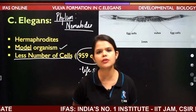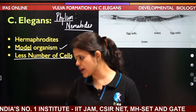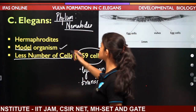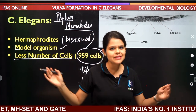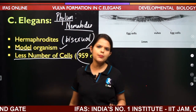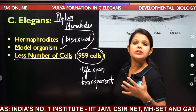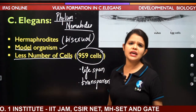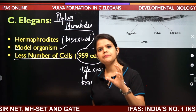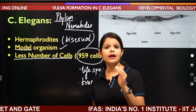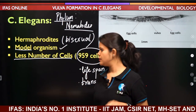C. elegans is also a hermaphrodite, meaning it consists of both male and female sex organs — it can be considered bisexual. Both male and female reproductive organs are present in the same organism. The vulva is the female reproductive part. In C. elegans, the male reproductive part synthesizes and stores sperm, which travels through the vulva to reach the egg for fertilization. If the vulva is absent, this process cannot occur.